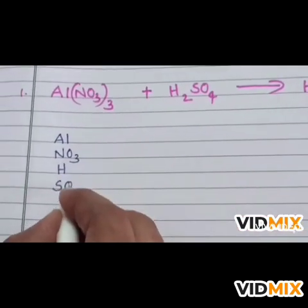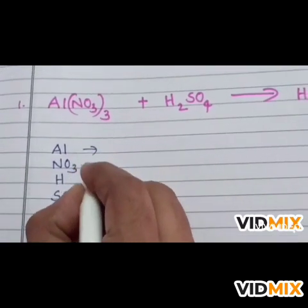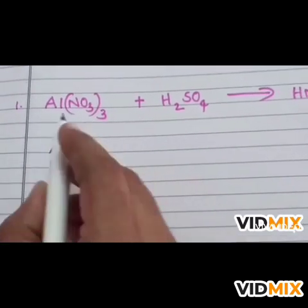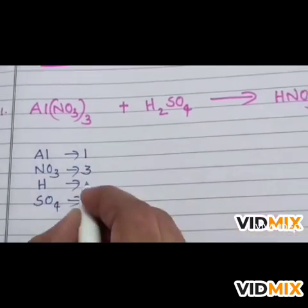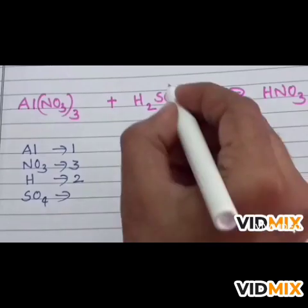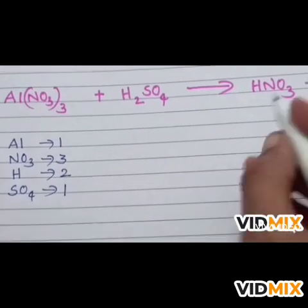So I am going to list out all the elements present: Al, NO3, H and SO4. Al is 1, NO3 is 3, H is 2 and SO4 as a whole we are considering it as 1.